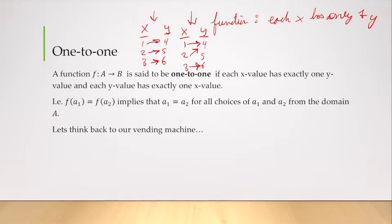It just so happens that in this case, that this y has two x's. So these are both functions, but only one of them has a special property of being one-to-one. A function from our domain to our target is to be one-to-one if each x value has exactly one y value. And each y value has exactly one x value. That's what's different.